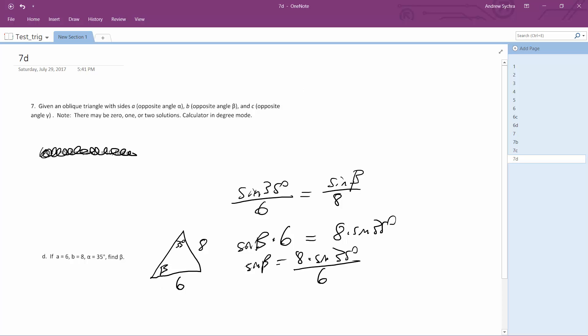This is a unique problem, so beta is going to equal arcsine of, well, reducing it, 4 times sine of 35 over 3.